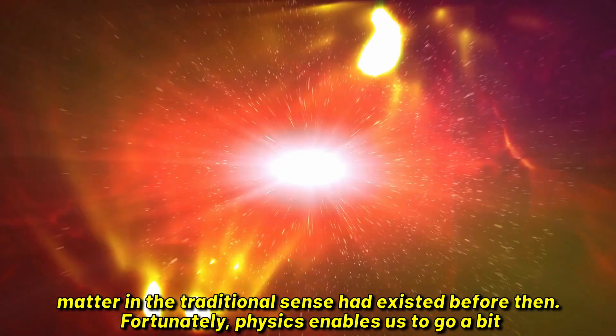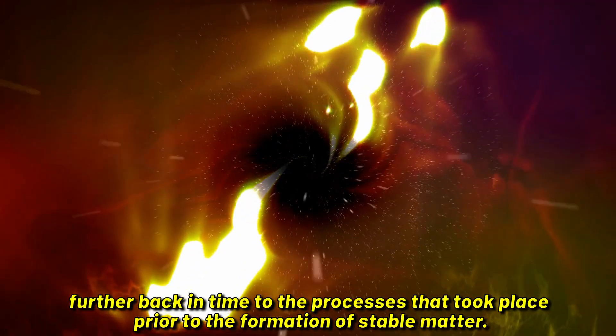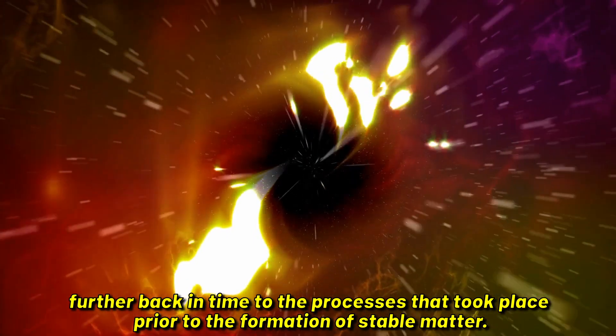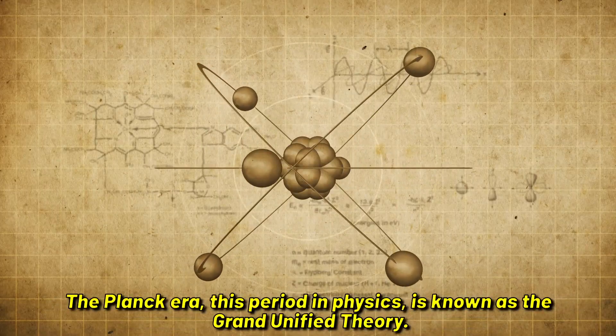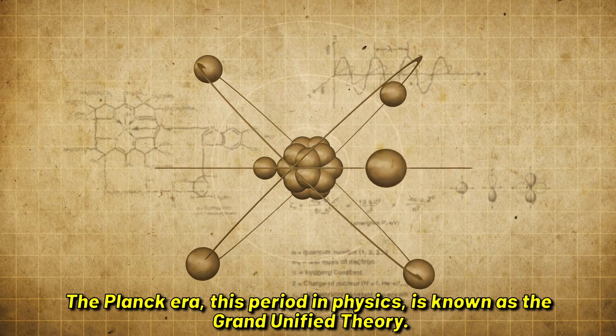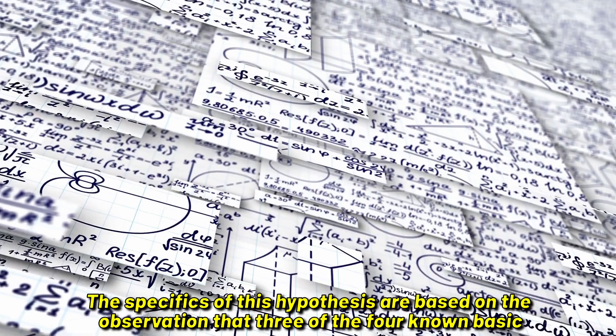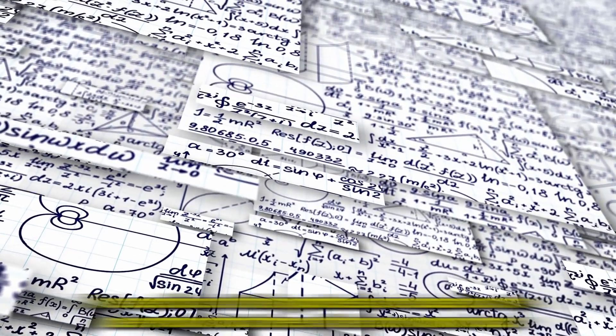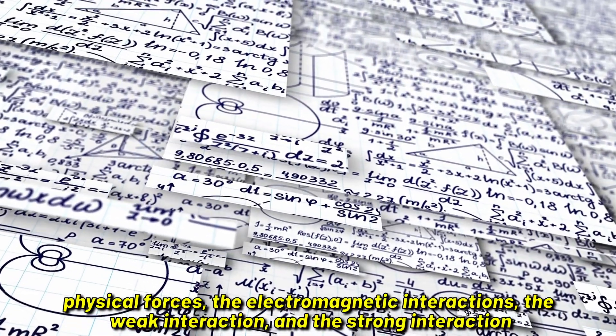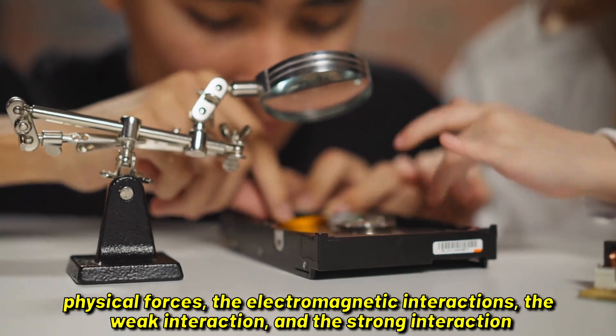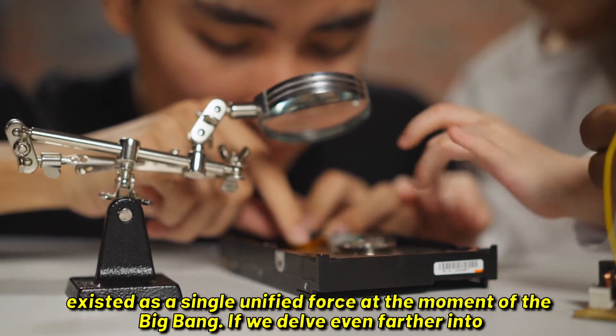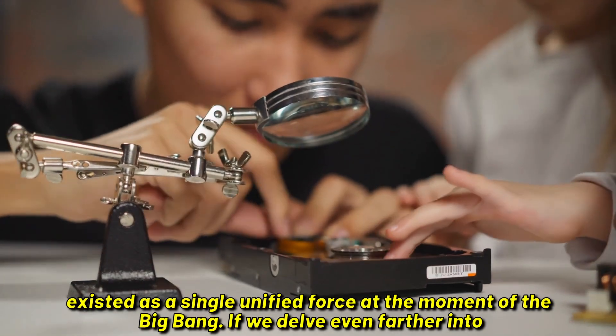Fortunately, physics enables us to go a bit further back in time to the processes that took place prior to the formation of stable matter. The Planck era, this period in physics, is known as the Grand Unified Theory. The specifics of this hypothesis are based on the observation that three of the four known basic physical forces—the electromagnetic interactions, the weak interaction, and the strong interaction—existed as a single unified force at the moment of the Big Bang.